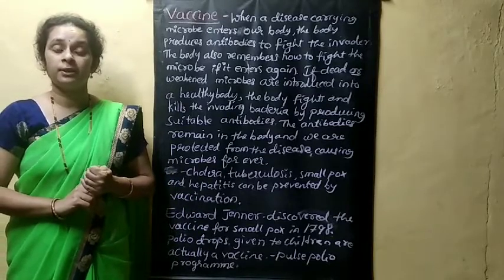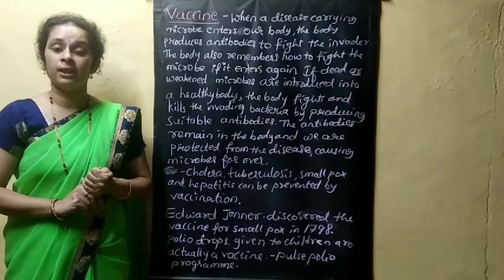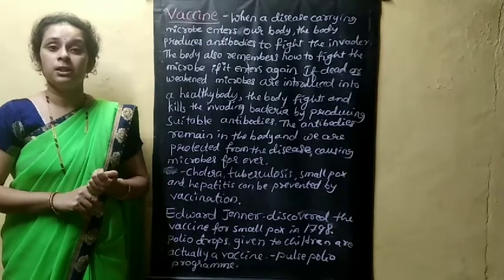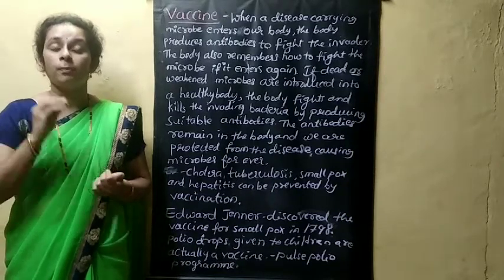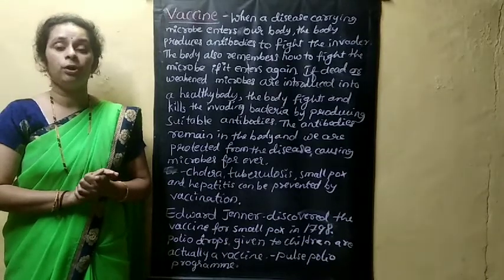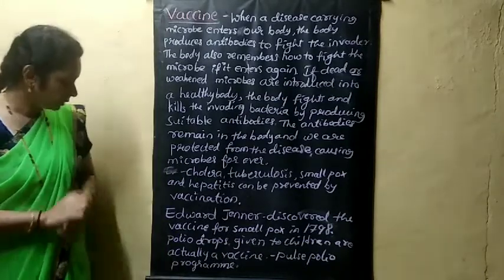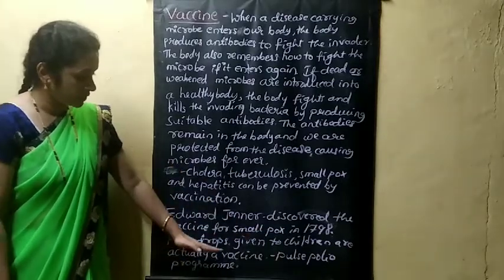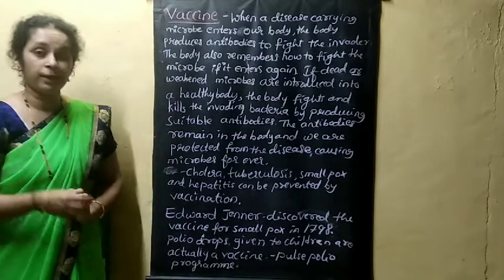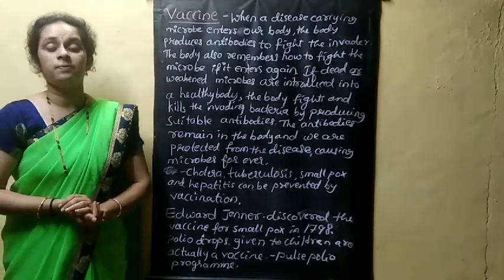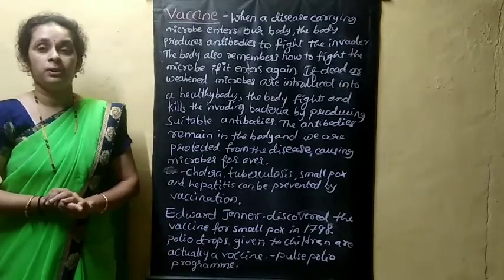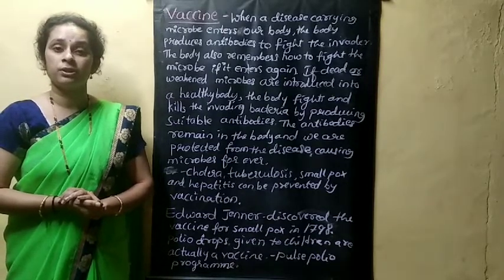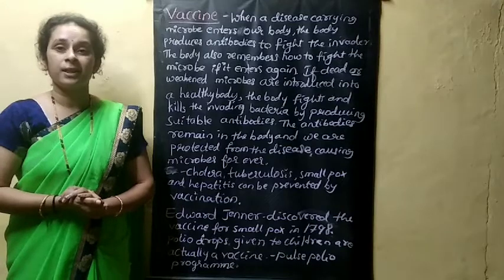You might have heard about the pulse polio program in TV advertisements and in newspapers. You know that children are given polio drops to prevent polio disease. Polio drops given to children are actually a vaccine, and with the help of the pulse polio program, these vaccines — mainly made by microorganisms — help to kill some of the disease-causing microorganisms.